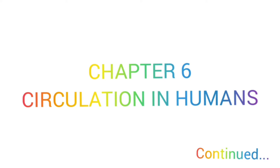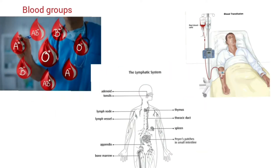Welcome back to the second part of chapter 6, circulatory system in humans. In this video we will be learning about blood groups and blood transfusion, and we will also be learning about the lymphatic system.